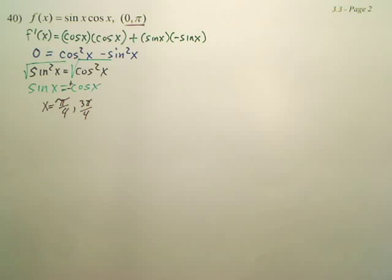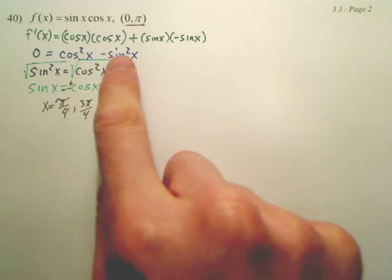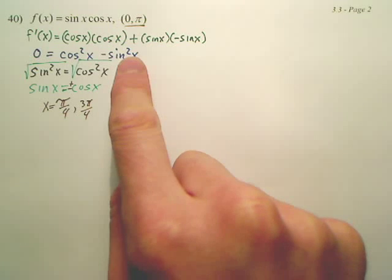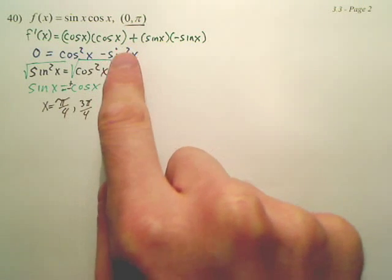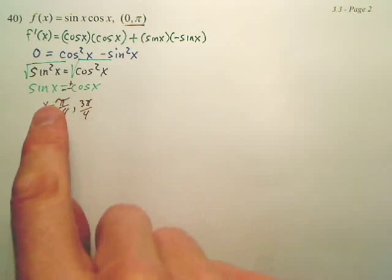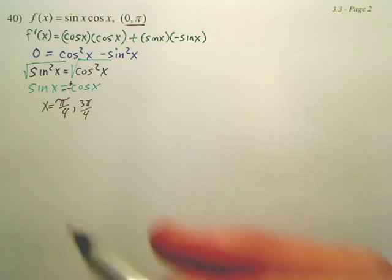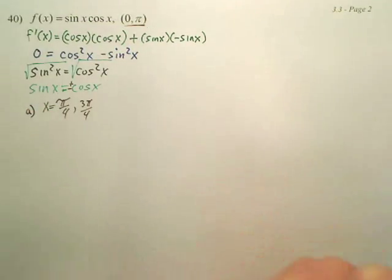Got it? The other method, just real quick, would have been this right here is sine 2x. Wait, no. It's cosine 2x. You could have set cosine 2x equal to zero and solved that. You would have got these two. That's A, critical numbers.